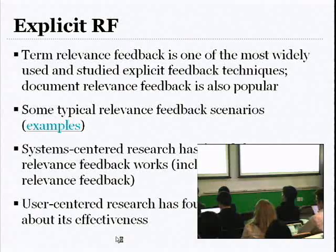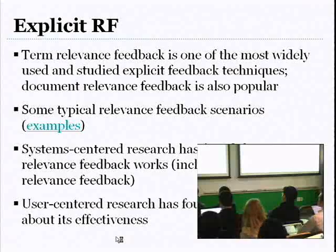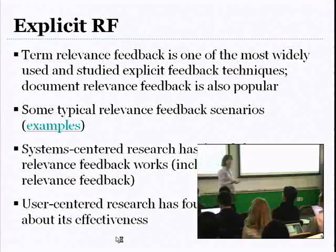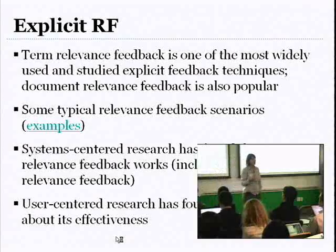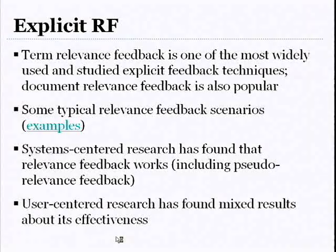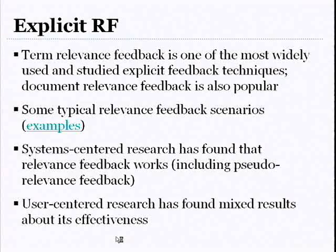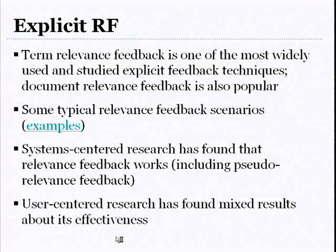I'll also let you know of some challenges with using implicit feedback. When you think about explicit relevance feedback, the major way it's been used is term relevance feedback — a system suggesting some terms to a person saying, maybe you want to add some of these terms to your query. You can also think about it happening at the document level, where a user says, I like that document. Each technique has its own set of problems regarding how to use the information and how to decide what terms to show people.